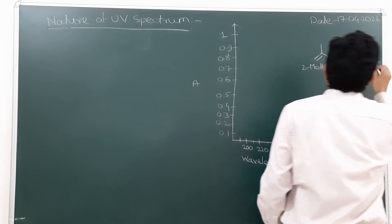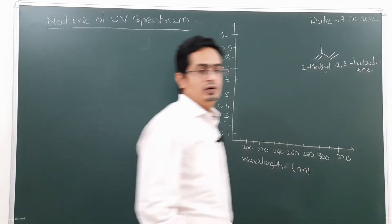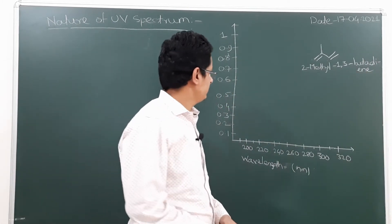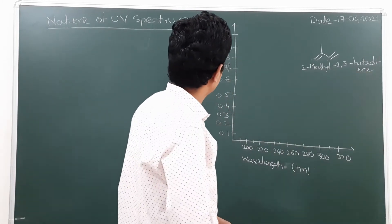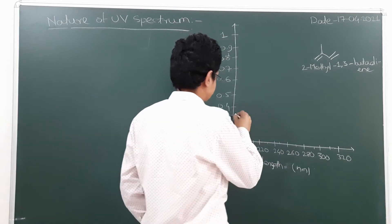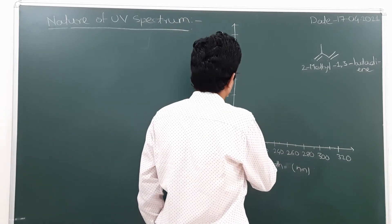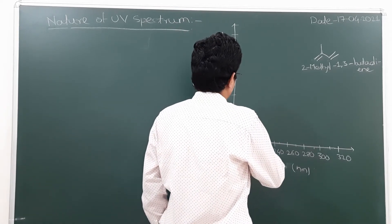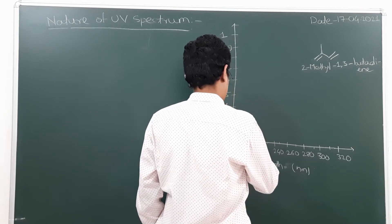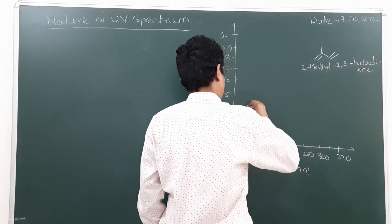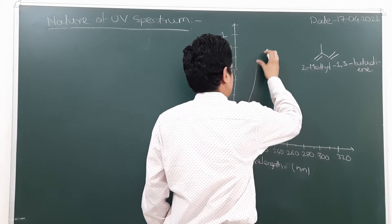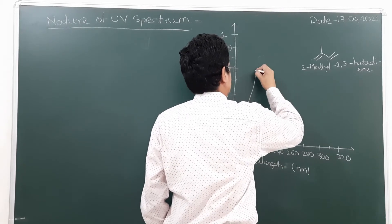The compound is 2-methyl-1,3-butadiene. Now for this compound, we will apply or plot the UV spectrum.